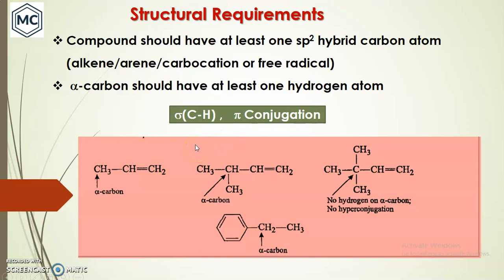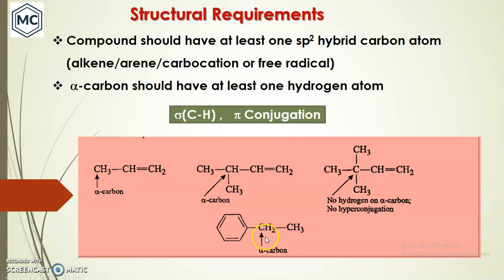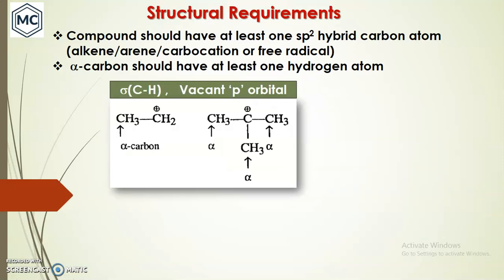There are many kinds of hyperconjugation. The first type is the interaction between a sigma C–H bond and a pi bond. For example, in propene, the sigma C–H bond can interact with the pi bond — this is the alpha hydrogen atom interacting with the pi bond. However, if there is no alpha hydrogen atom, there is no hyperconjugation effect. In benzene, with sp2 hybridized carbon, the alpha hydrogen can interact with the pi system.